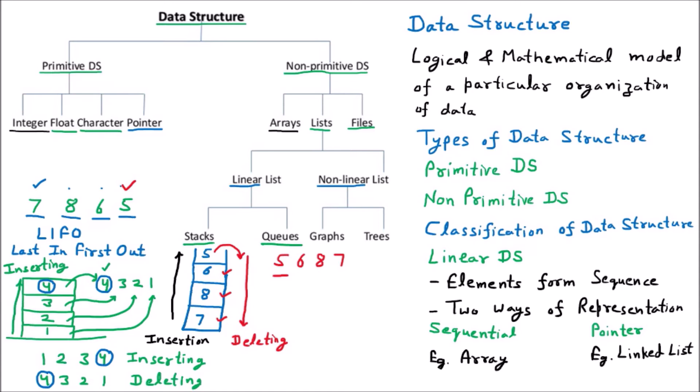Let us suppose we are having some plates in our kitchen. This is the first plate, then the second plate, then the third plate, then the fourth plate. When I have to pick out a plate, I will not take out the bottom plate — I will take the top plate. So plates stacked in the kitchen, or books placed on a shelf, are all examples of the stack.